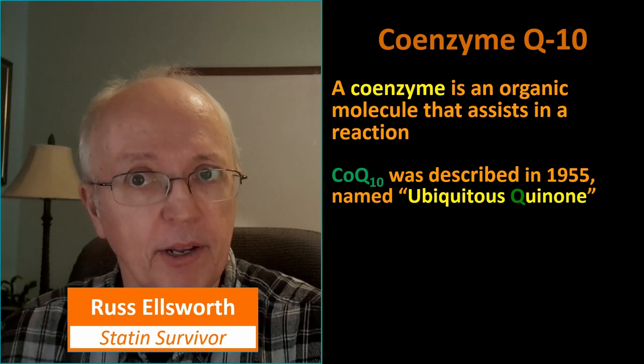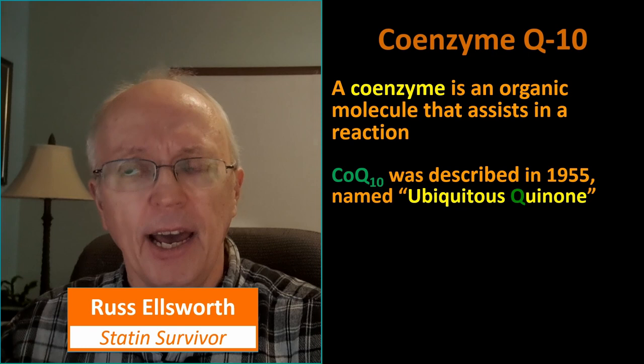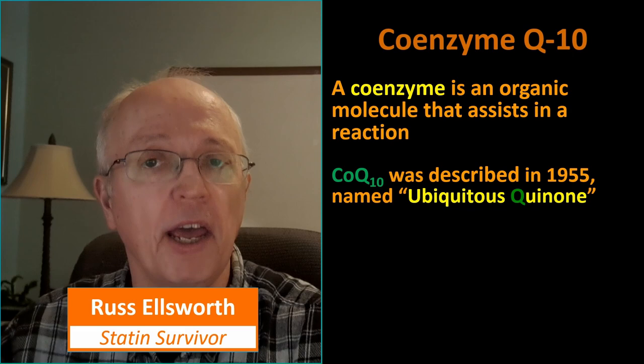The first thing you might want to know is what is a coenzyme? It's an organic molecule that assists in some reaction within the body — it acts as a catalyst. CoQ10 in particular was first described in 1955 and it was named ubiquitous quinone. Ubiquitous meaning everywhere. And I believe the Q from quinone — not from ubiquitous — is where we get the Q in CoQ10.